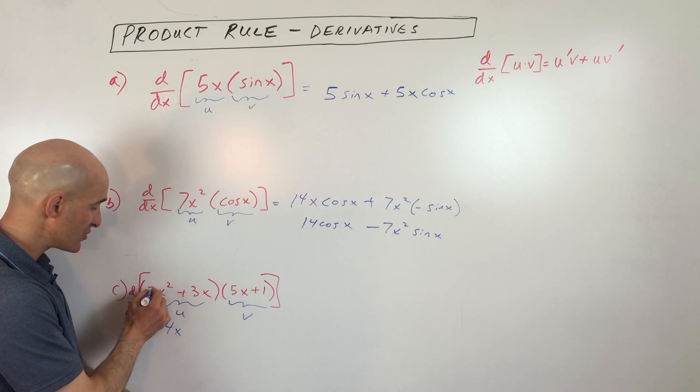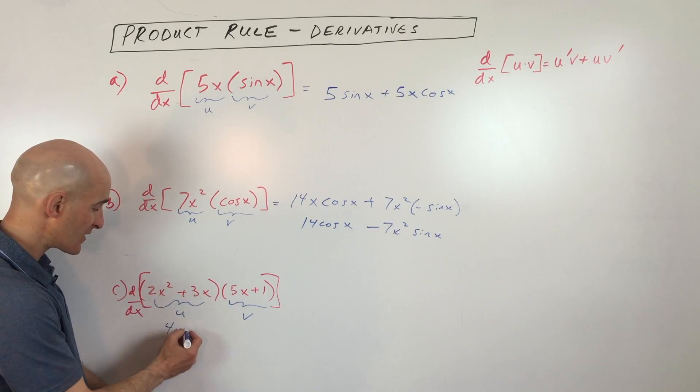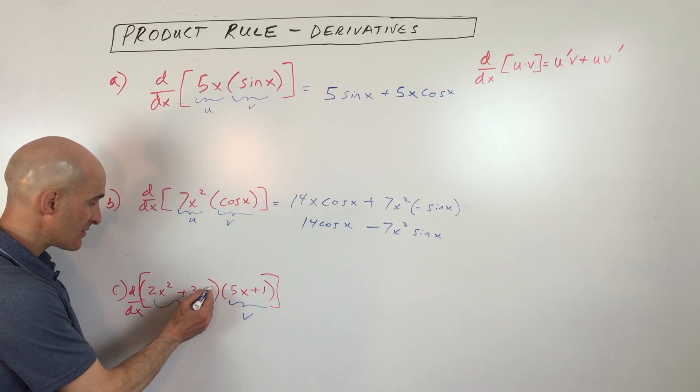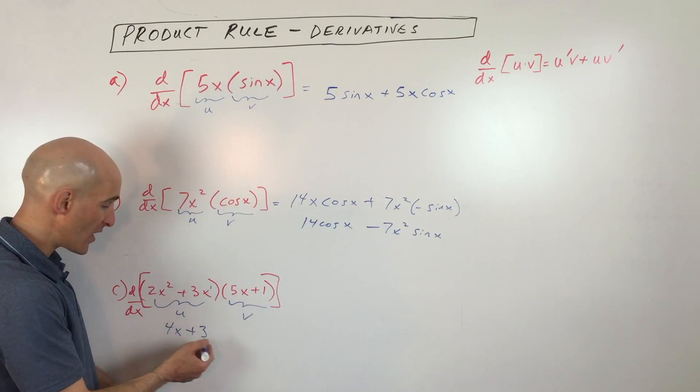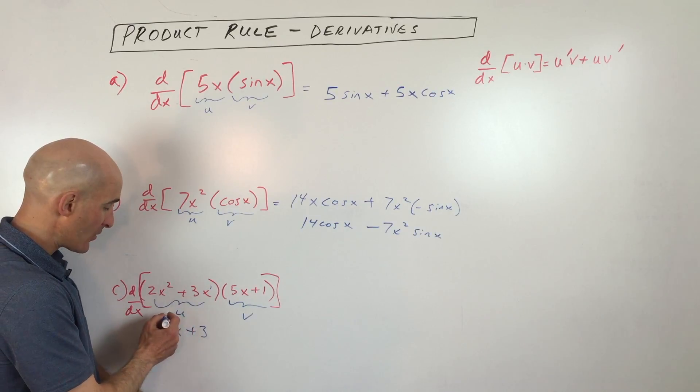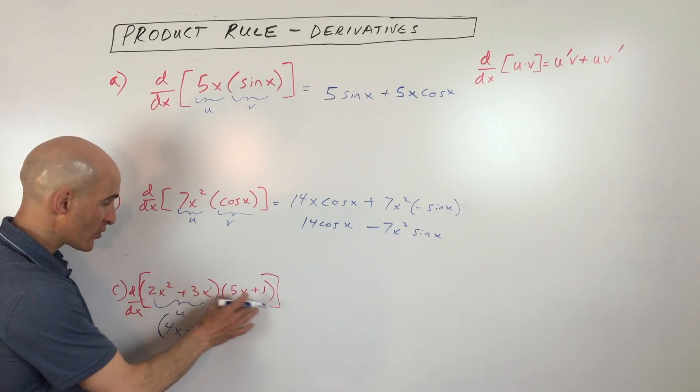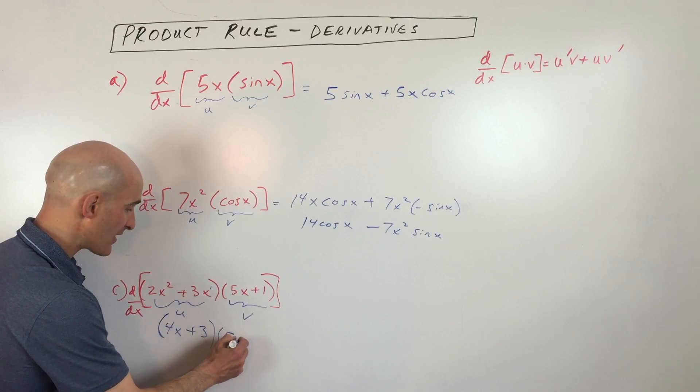So derivative of this whole quantity, 2x squared plus 3x is going to be what? It's 4x, because we're bringing down the 2, 2 times 2 is 4, we're subtracting 1, plus, bring down the 1, 1 times 3 is 3, x to the 0 is 1, so this just becomes 3. So we took the derivative of u, we're going to leave v alone, which is 5x plus 1.